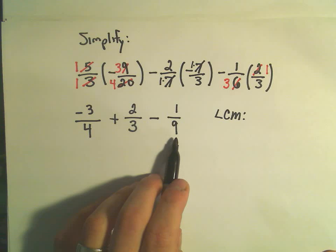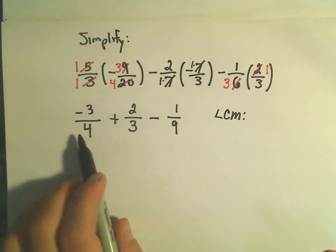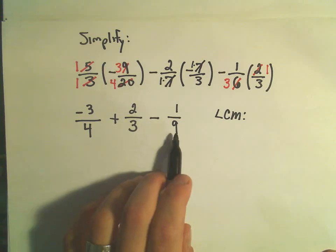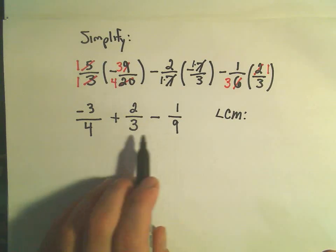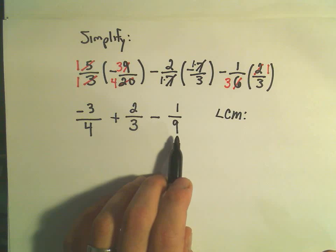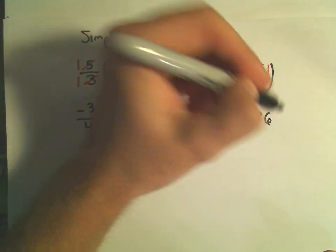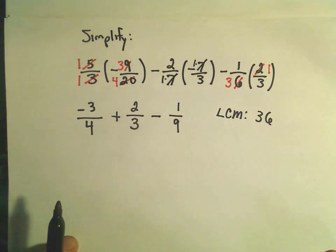So certainly 9 would not be the common denominator, because 4 will not divide evenly into 9. And then I think, well, does 18 work? Well, no, I don't think so. 27 would be the next one, that doesn't work, but I think we could use 36. 4, 3, and 9 will all divide evenly into 36.